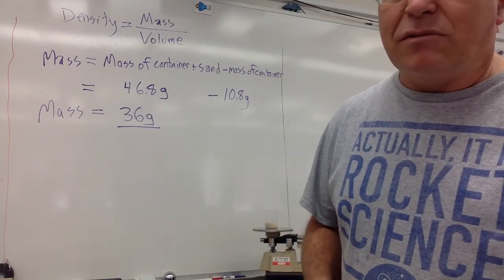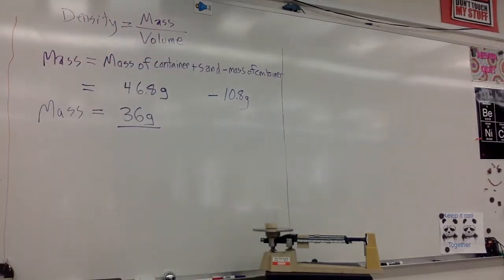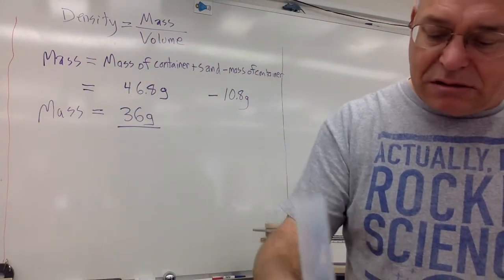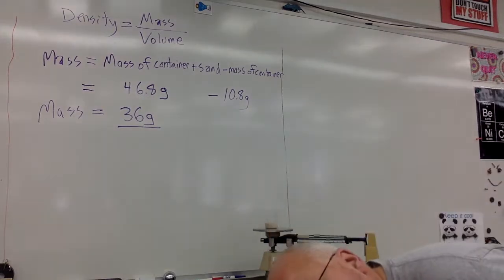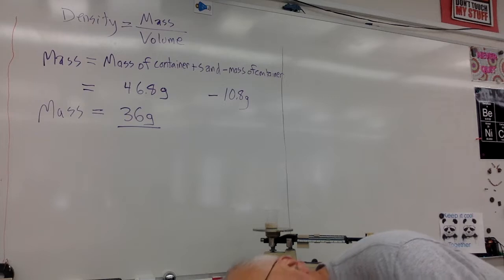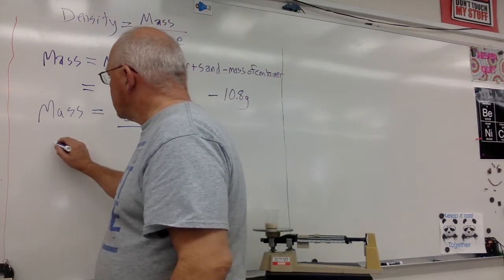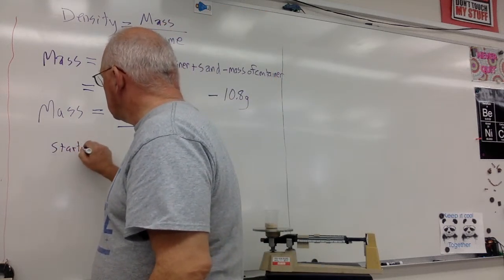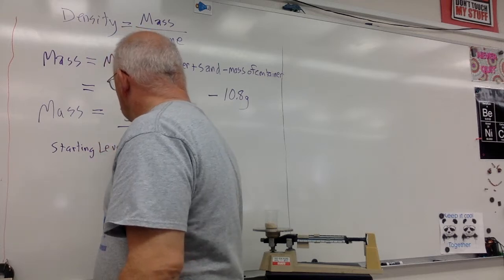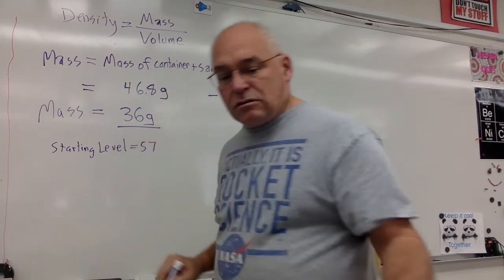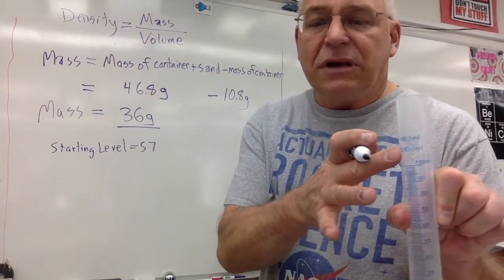Now, to find the volume of the sand, I need to put some water in my graduated cylinder. You've got to read it, put it on a horizontal surface, read it carefully. And that comes out to 57. So I'm going to put the sand in the graduated cylinder. Milliliters.